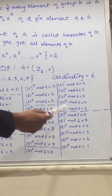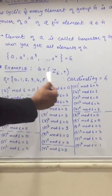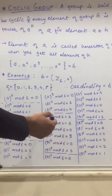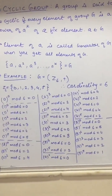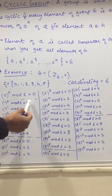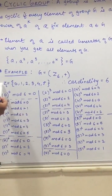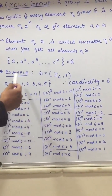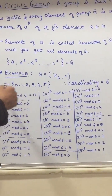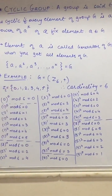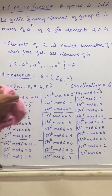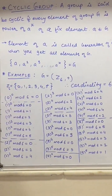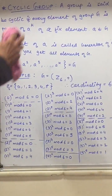So we will be getting some subgroups and generators. From 1 we are getting all the elements of Z6, and from 5 we are also getting all the elements of Z6. So some are subgroups and some are generators.